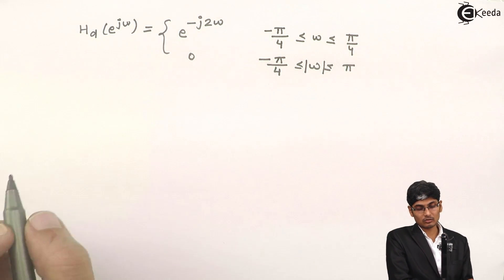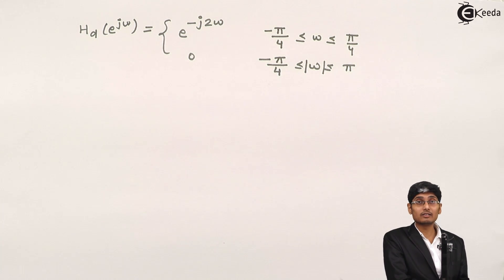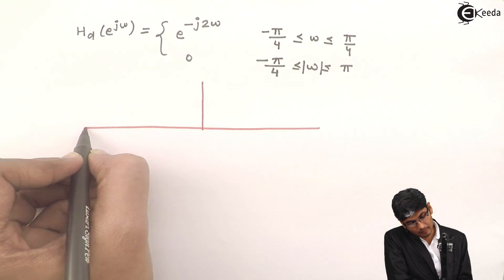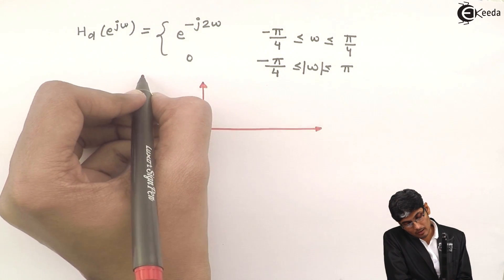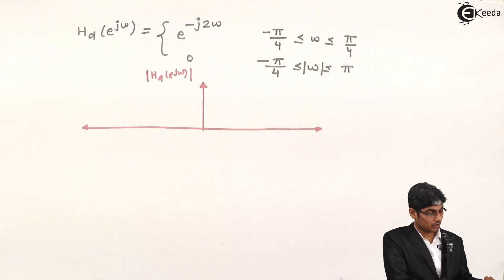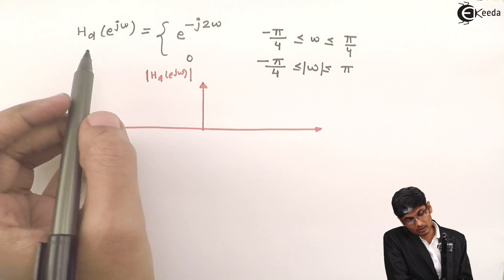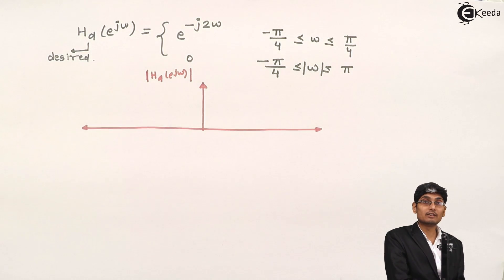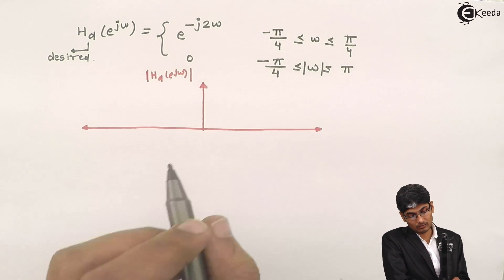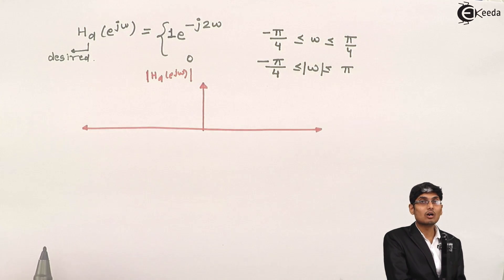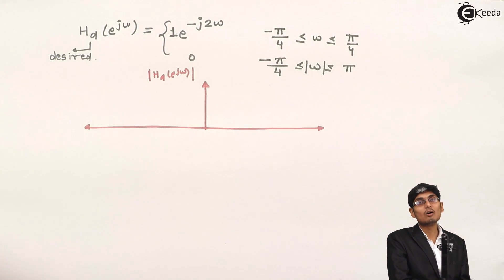What does this characteristic look like? We need to understand and analyze what it looks like. Let us draw the magnitude of H_D(e^{jω}). Here D stands for desired. What is the magnitude from the given data? The magnitude is hidden and it is 1. So when they write e^{-j2ω} alone, the magnitude is given as 1.